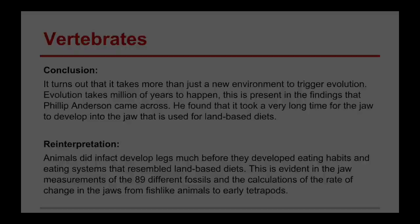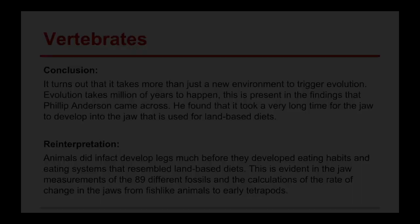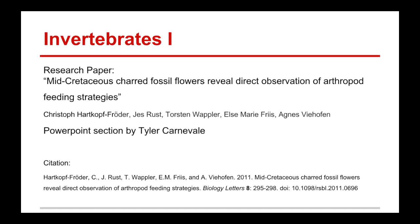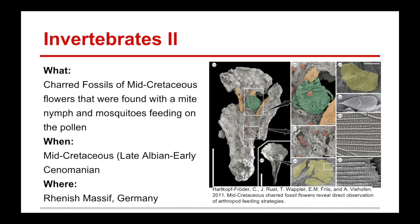My name is Tyler Carnevale, and the paper we're going to be looking at is called "Mid-Cretaceous Charred Fossil Flowers Reveal Direct Observation of Arthropod Feeding Strategies." The paper examined charred fossils of mid-Cretaceous flowers found with the fossil of a mite nymph and a few fossilized scales of mosquitoes that were hypothesized to be feeding on the pollen of angiosperms. These fossils were found in the late Albian to early Cenomanian periods and were found in the Rhenish Massif in Germany.